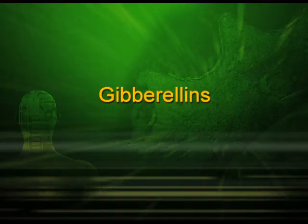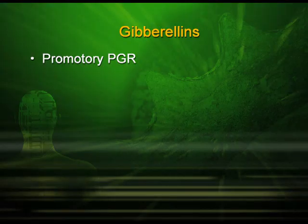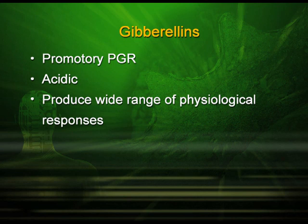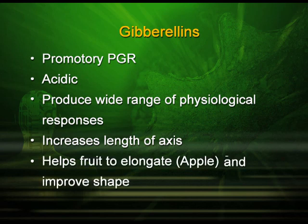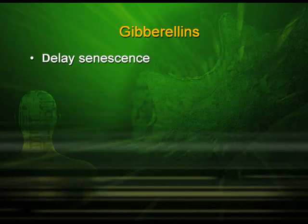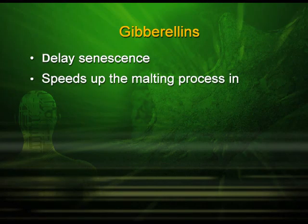We move on to the second PGR: gibberellins. It is also very important as a promotory PGR, and it is acidic in nature — that is why we say gibberellic acid, GA. It produces a wide range of physiological responses in plants. It increases the length of axes, and is sometimes used in grape plants to produce larger bunches. It helps fruits to elongate — for example, apples are round but with this PGR the apple becomes slightly elongated for a better shape. It delays senescence, so dying of plant tissue is delayed. It speeds up the malting process in the brewing industry, and increases the length of stem in sugarcane, increasing sugar output by almost 20 percent.